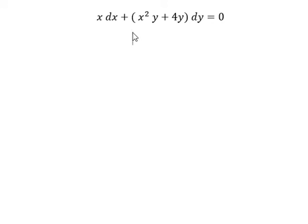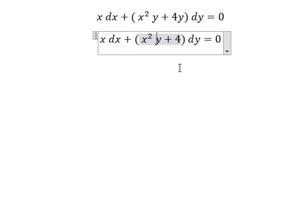Hello everybody, so today I want to show you how to answer. We have x dx plus x squared y plus 4y dy equals 0.